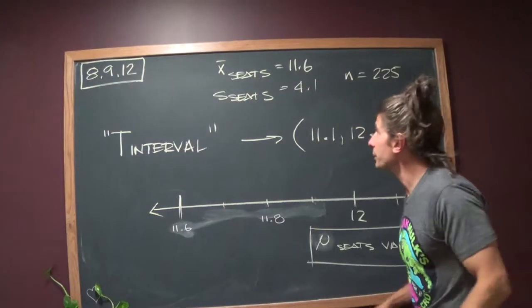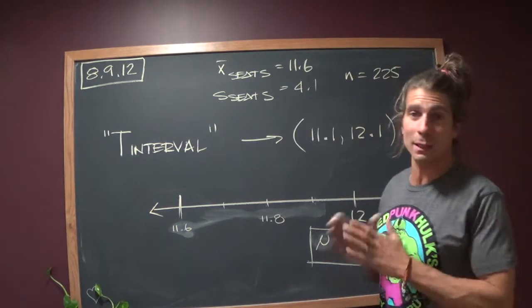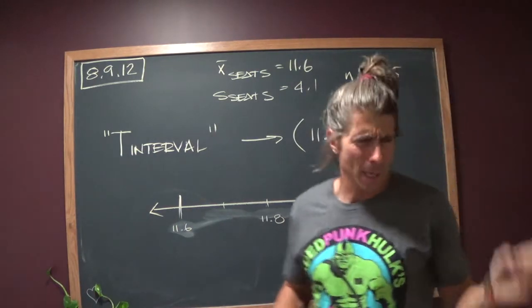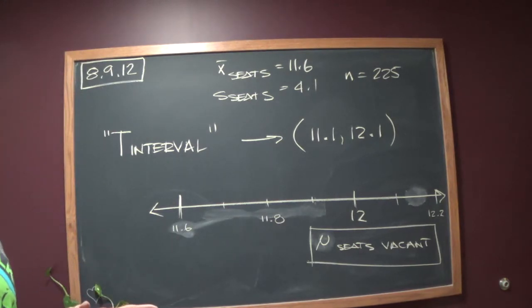Hey everybody, the purpose of this video is to help you through problem 8.9.12 in the collaborative statistics textbook. In this one, it looks like it's an airline who's estimating average number of vacant seats per flight.